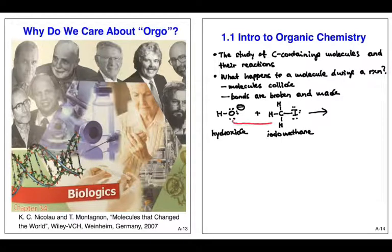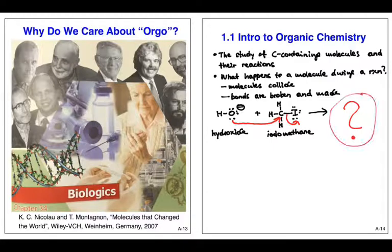Now guess what forms? The arrow from the oxygen to the carbon clearly shows that we're forming an oxygen-carbon bond, a new oxygen-carbon bond. So we're forming methanol and iodide.